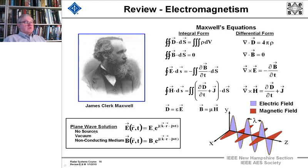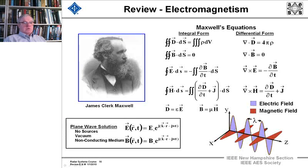For a plane wave solution with no sources in vacuum, we see a plane wave transmitting an electric field and a magnetic field in red. The distance between the peaks is the wavelength. We have the magnetic field along the x direction and the electric field in the y direction, and if we cross E into H we get the direction of the electromagnetic wave that moves out.